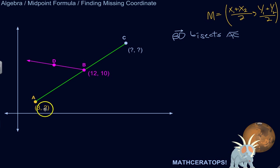We know the coordinates of A and the coordinates of the midpoint between A and C, but we don't know the coordinates of C. We can figure them out though, so let's check that out.